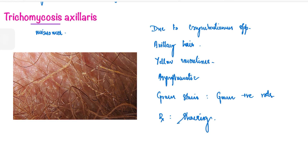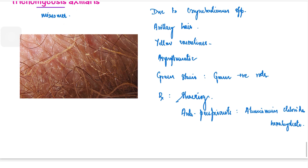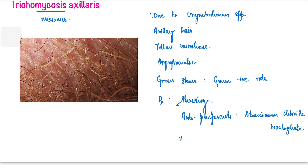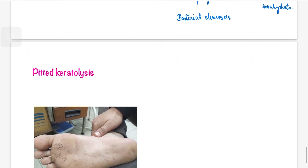Treatment is simple: advise the patient to shave the axillary hair and reduce the predisposing factor, which is sweating. To reduce sweating, give aluminum chloride hexahydrate, which is the commonly used antiperspirant. You can also give bacterial cleansers. To summarize trichomycosis axillaris: caused by Corynebacterium species, advise shaving, give antiperspirants and bacterial cleansers.